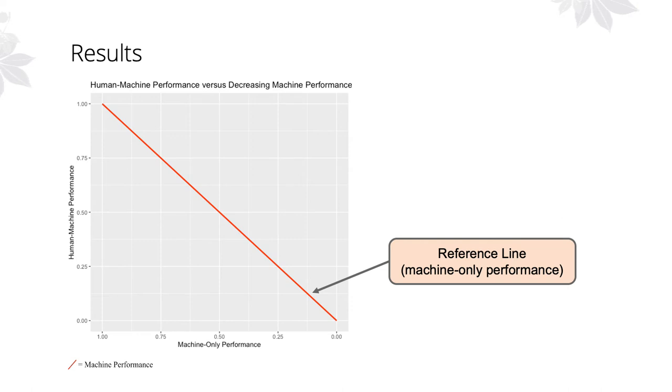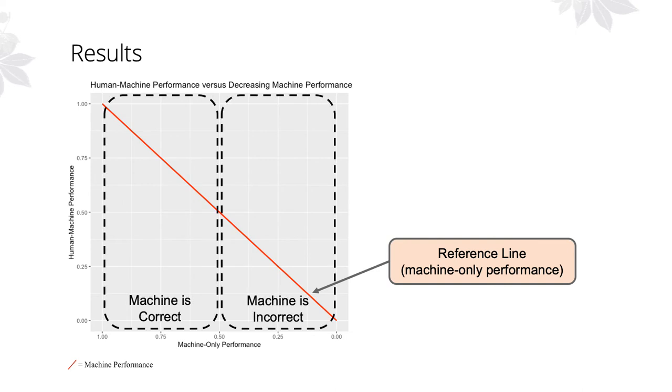To construct the extensibility plot, we first draw a reference line to show how the accuracy of the machine prediction declines. This is how the machine would perform if it alone were completing the task. We then have two regions on the chart, the left where the machine prediction is correct, and the right where the machine prediction is incorrect.